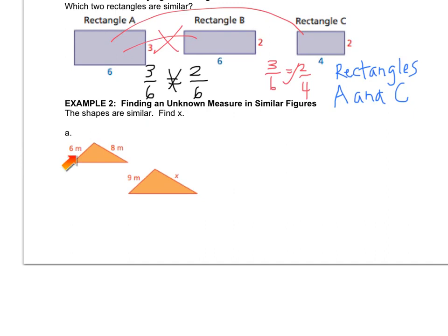So you just pick any random side on one of the shapes, and I randomly picked 6, so I'll write that down. And you want to match it up with its corresponding part. Now, which measurement over in the other shape is in the same position as the 6?